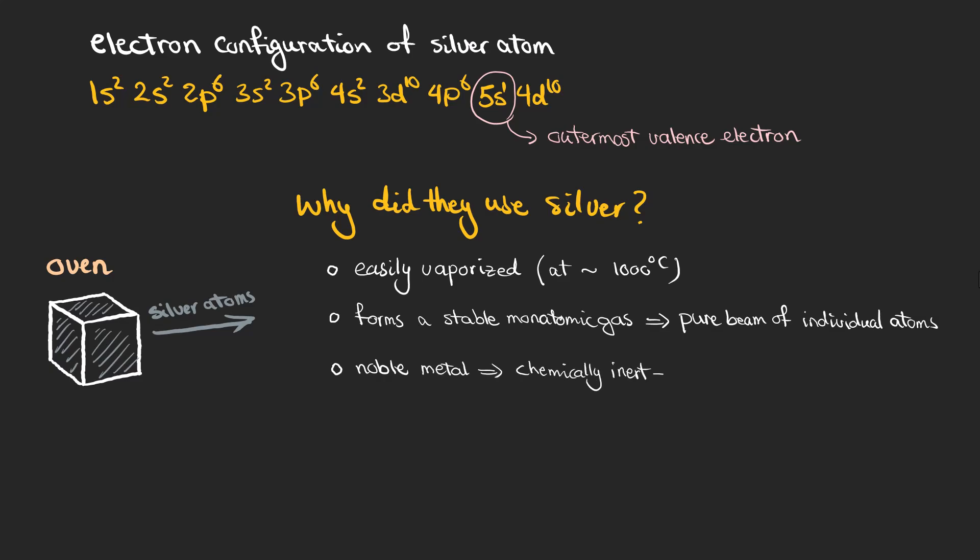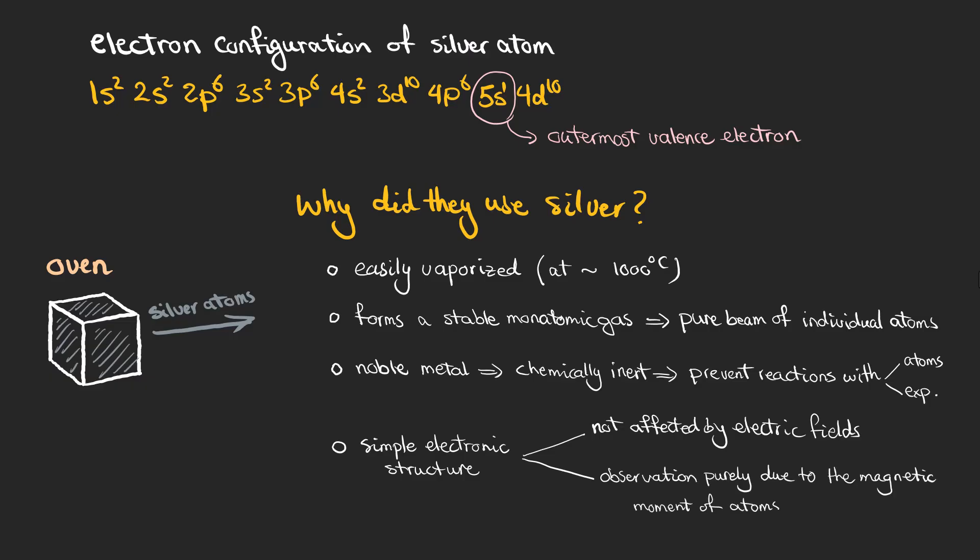In addition, silver is a noble metal and is chemically inert under normal conditions. This means that silver atoms in the gas phase do not react with each other or with the walls of the experimental apparatus ensuring that the beam remains pure and stable. Silver atoms are neutral meaning they are not affected by electric fields only by magnetic fields. This allowed them to ensure that any deflection they observed was purely due to the interaction of the atoms with the magnetic field eliminating any complicating factors.